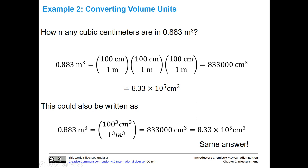You may see this as a conversion somewhere else, and they will almost always leave off this three. That kind of obscures what's actually happening, but the only reason they do that is that one times one times one is still one. I just put it there so it would be really clear. You can see that those meters cubed easily cancel out. You divide 0.883 by one times 100 to the third power, and you get the same answer: 883,000 centimeters cubed, in scientific notation with the same number of sig figs. This is a much more compact way to do it, but definitely do it the long way until you get really comfortable.